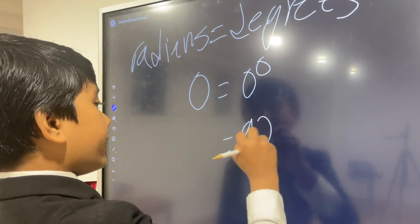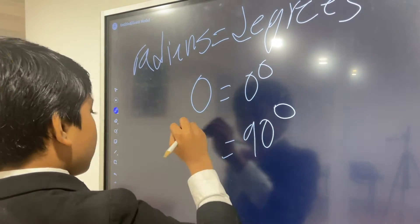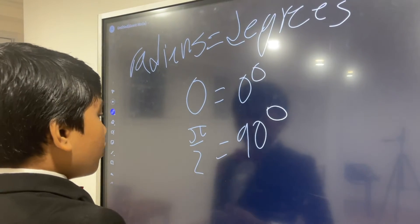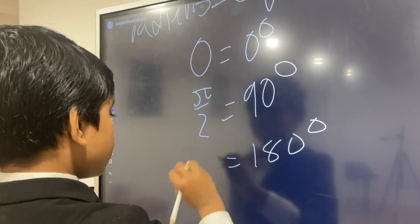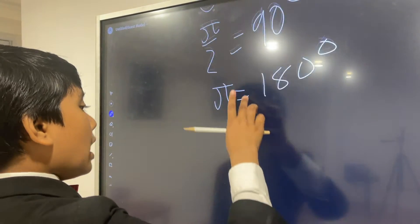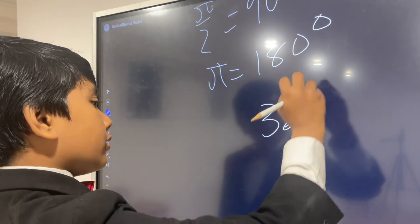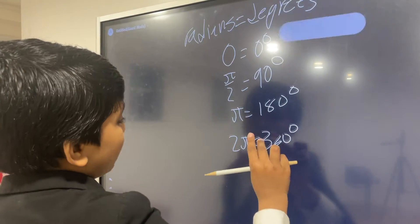If we had 90 degrees, radians would be pi over 2. If we had 180 degrees, it would just be pi. If we had 360 degrees, it would be 2 pi. You see the pattern.